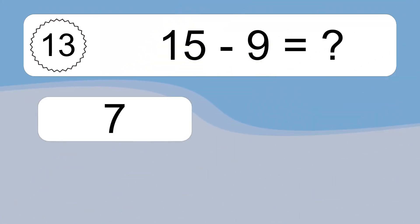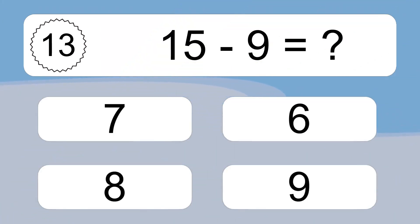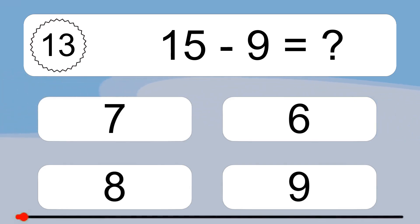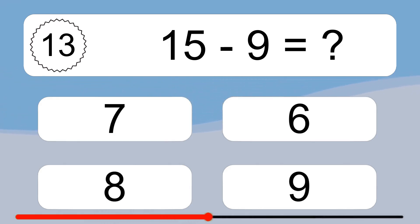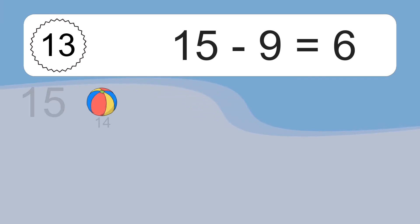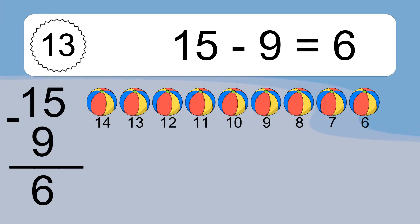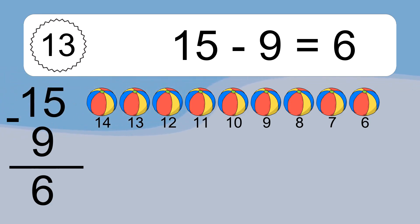15 minus 9 equals what? 15 minus 9 equals 6. Let's count it: 14, 13, 12, 11, 10, 9, 8, 7, 6.